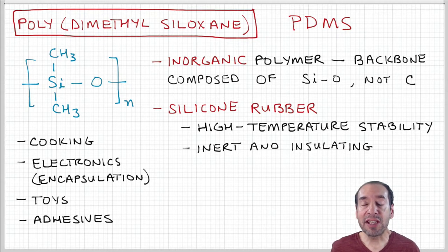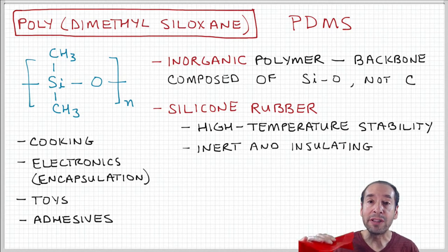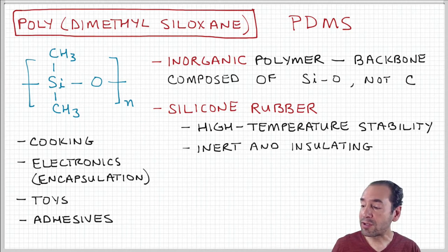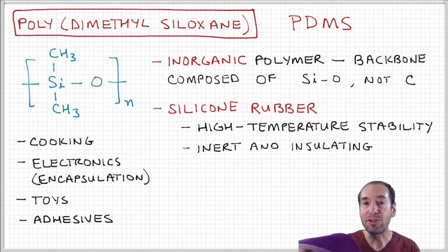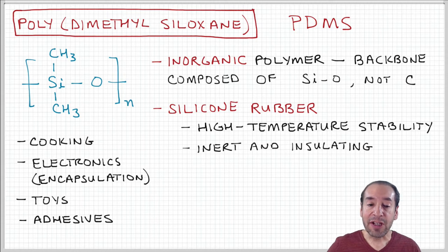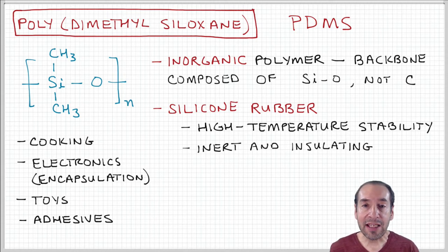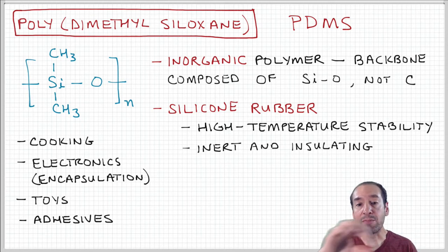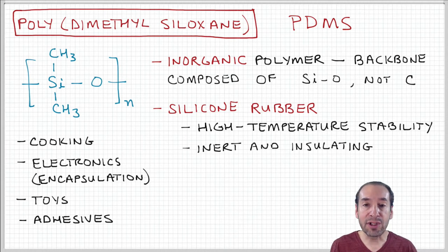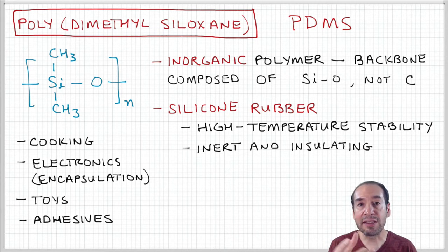Often where you might have seen these properties is in cookware — for example, gloves or things that can hold hot objects. They're made of these silicone materials, which are stable to high temperatures, or these trivets you can set hot cookware on on your countertop. It's also used a lot in electronics for encapsulation-type uses. You can pour this solution and polymerize it around the outside of an electrical connection, for example, and that will keep it insulated from the environment so that it's not exposed to the elements.